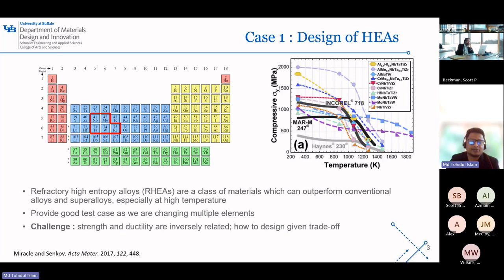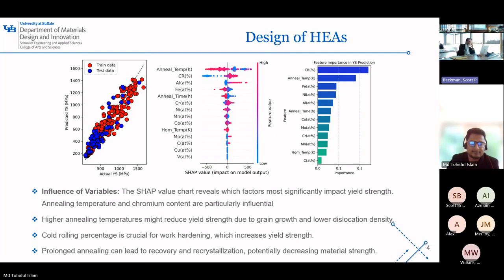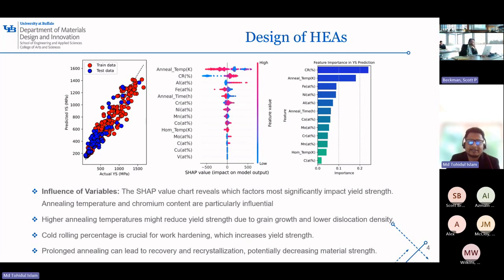We are planning to tackle this by tweaking the elemental mixture, aiming to strike the perfect balance. The question is: can we connect composition and processing to high-entropy alloy properties at the same time and also quantify their impact? The SHAP plot and the feature importance plot show not only the nature of the impact on the property but also quantify them.